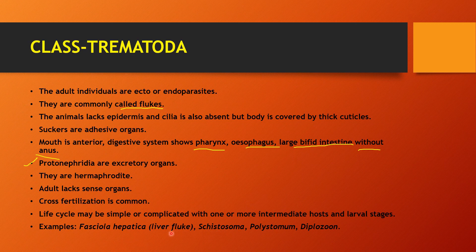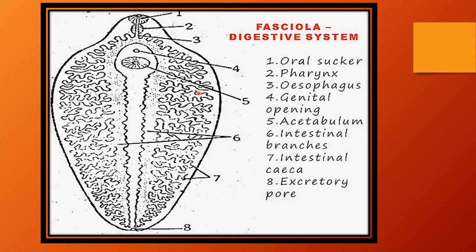Now let's look at the liver fluke diagram. This is the oral sucker — that is the adhesive organ. This is the pharynx, the esophagus, the genital opening, the intestinal branches, and the excretory pore. This is Fasciola hepatica — your liver fluke.